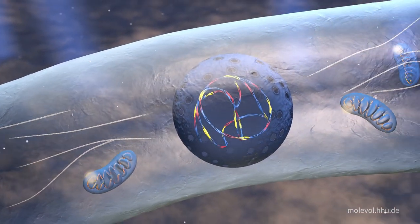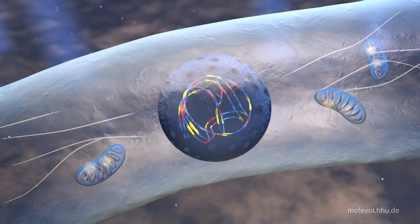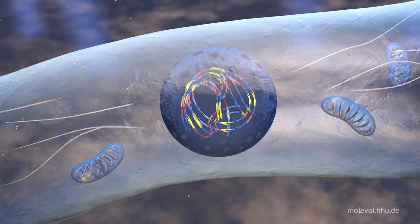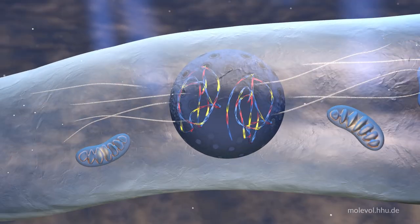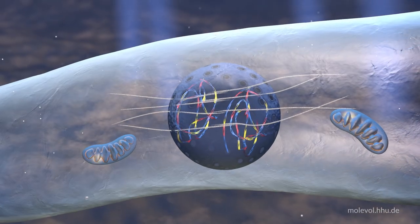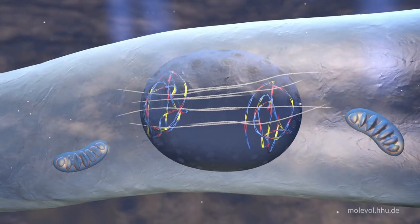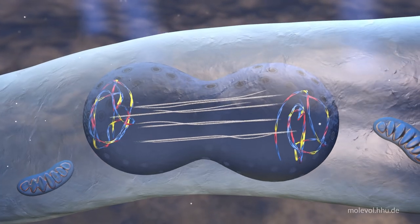In prokaryotes, chromosomes are partitioned onto daughter cells by attachment to the cell wall during cell division. In eukaryotes, chromosomes are isolated in the nucleus and have to be pushed apart at cell division by microtubules, the workhorses of the cytoskeleton.